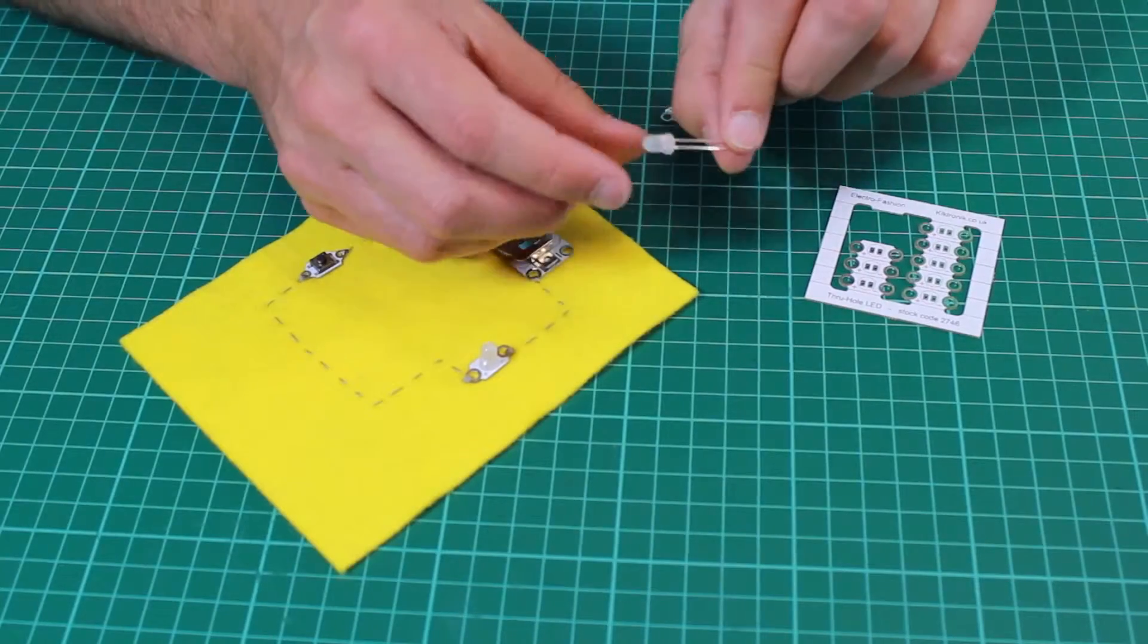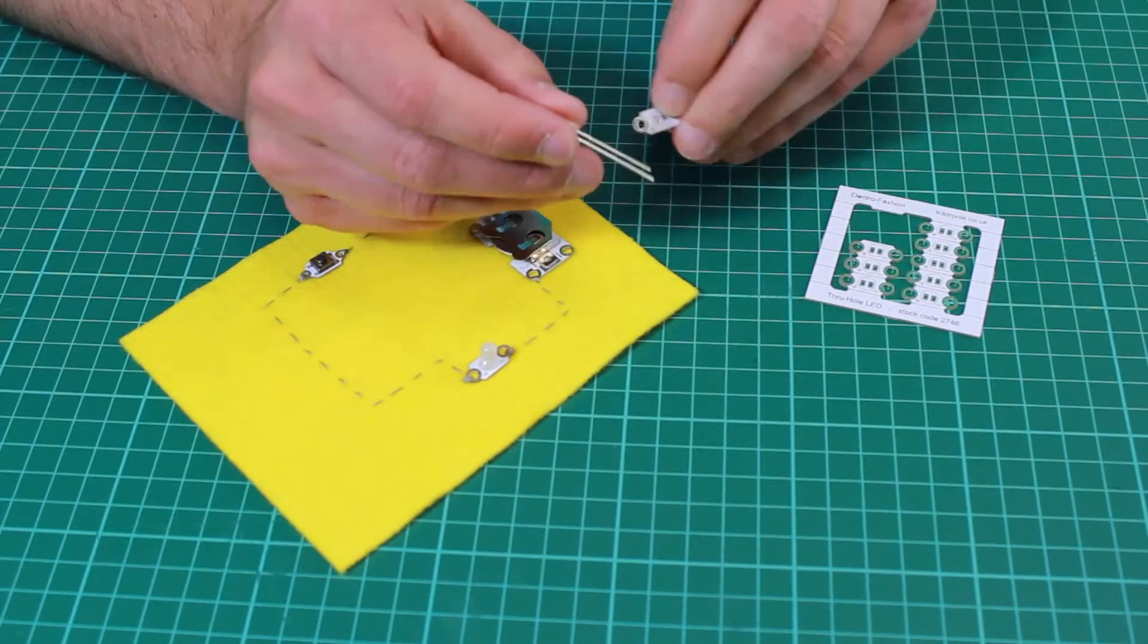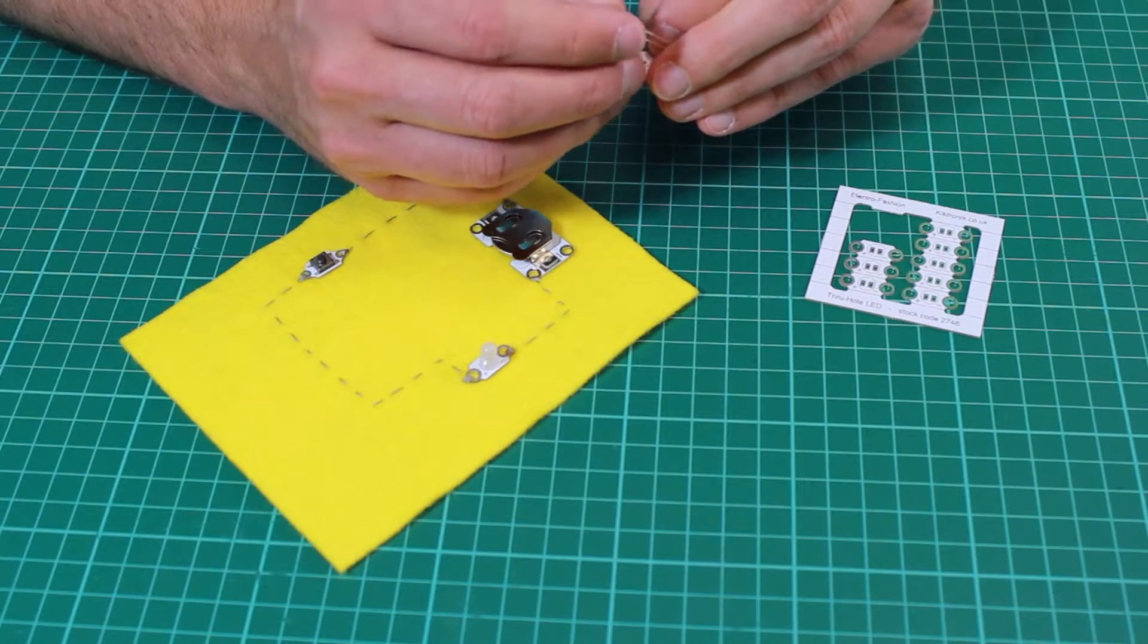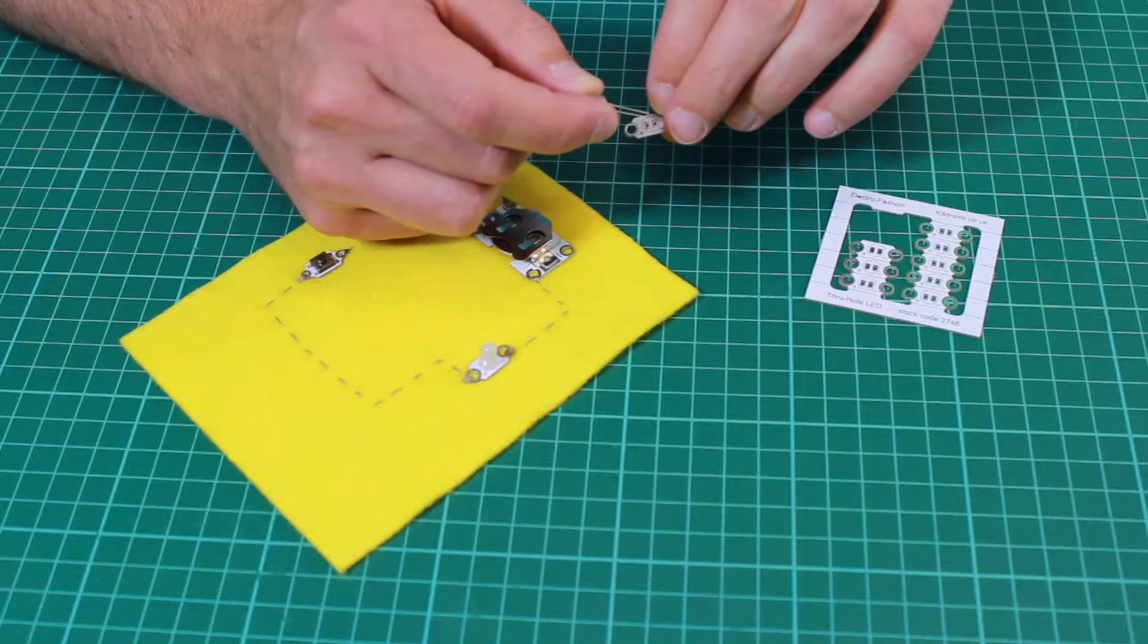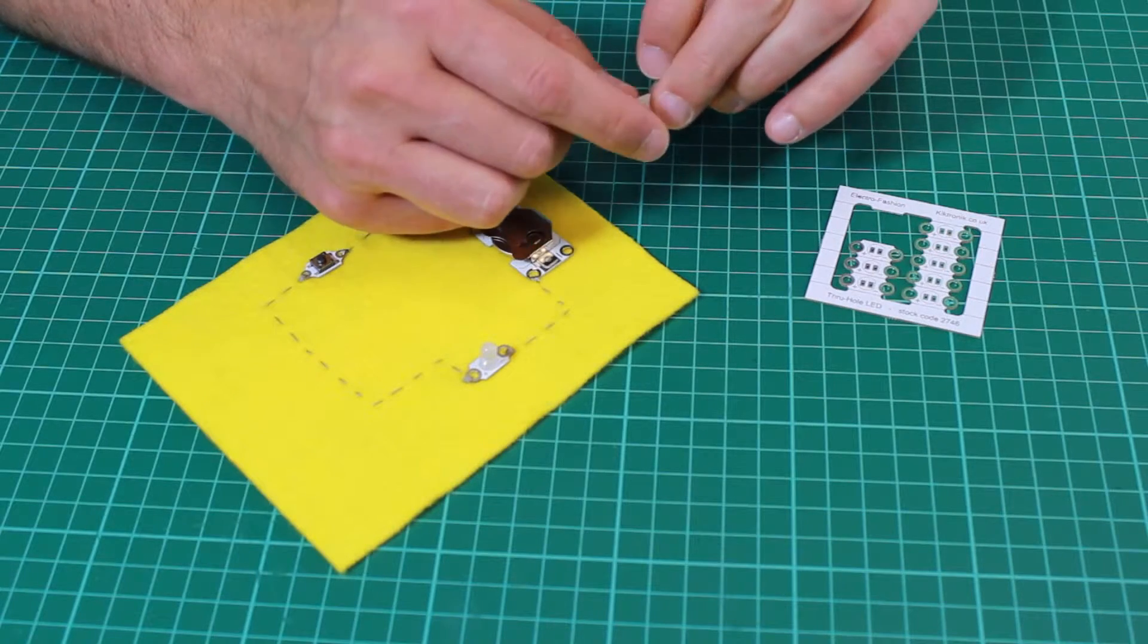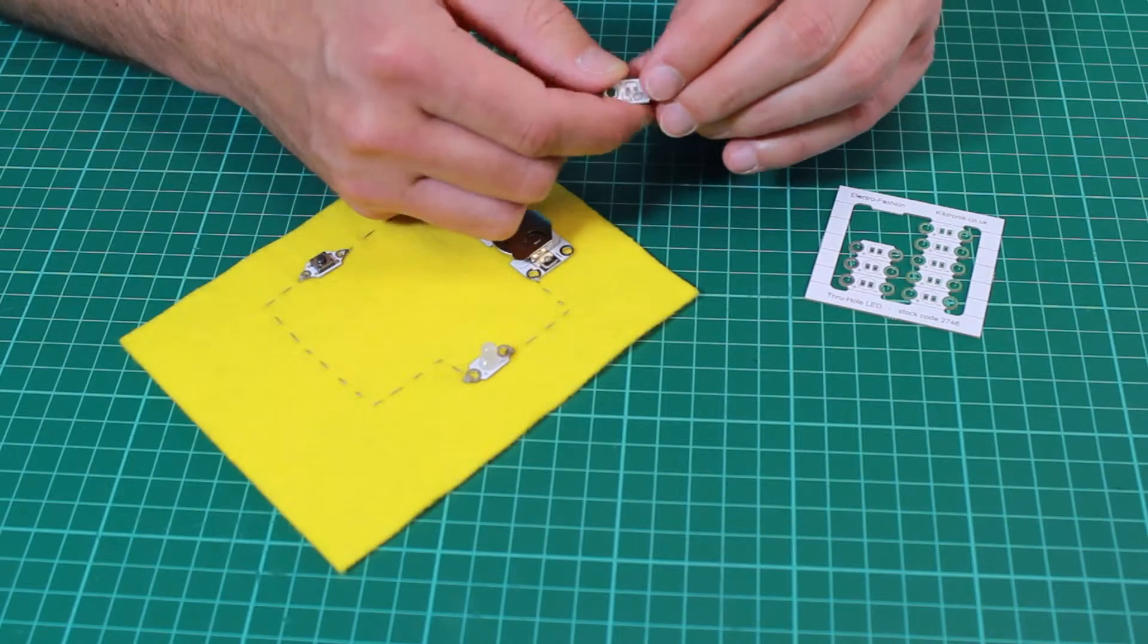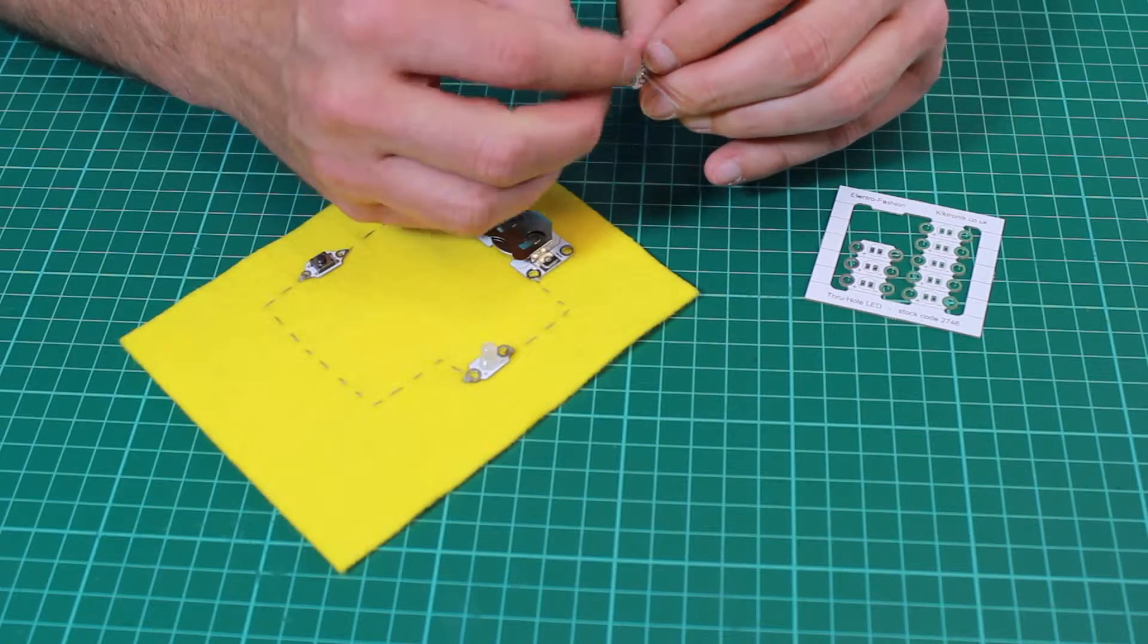We can take a through hole LED and this handy PCB, and all we have to do is line the flat edge up with the flat edge on the PCB, put the LED into place, and solder the legs at the back and trim them off.